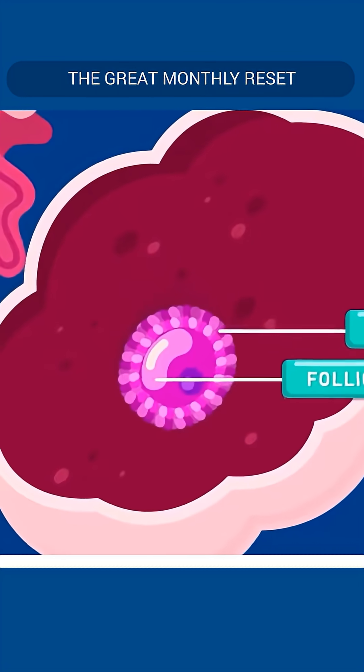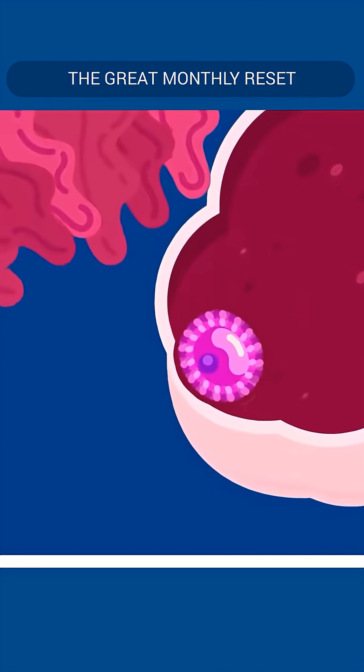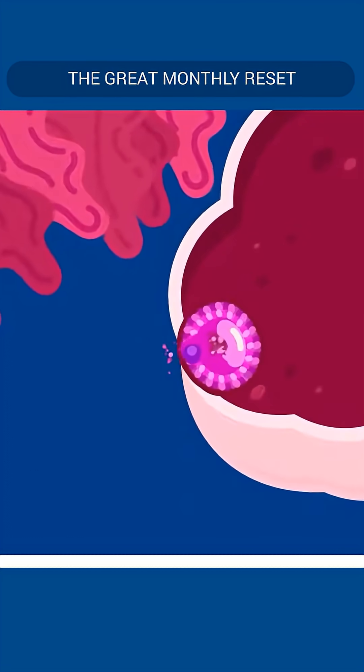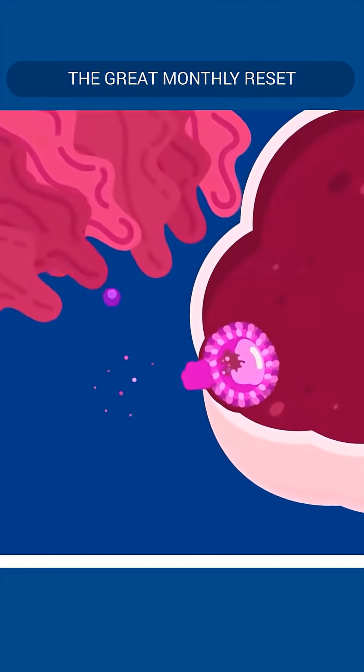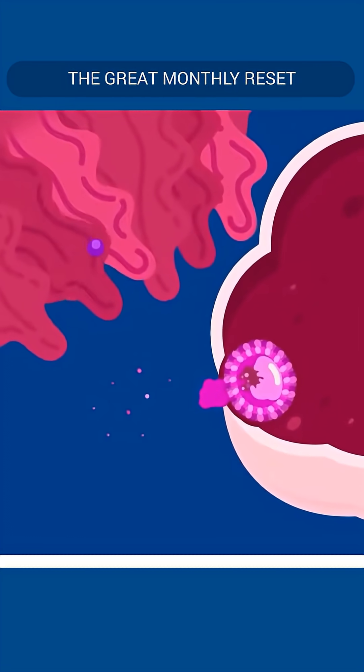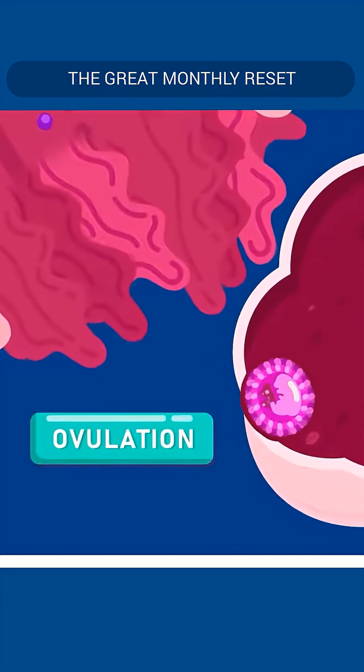At about the 14th day from the beginning of menstruation, the Graafian follicle ruptures and releases the egg into the oviduct funnel. This is called ovulation.